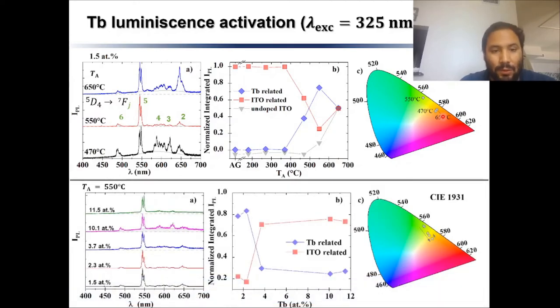Concerning the concentration quenching effect I mentioned earlier, here I'm showing you the luminescence spectra for samples annealed at 550 degrees and for different terbium concentrations. If we look at the integrated intensity, we see that in fact after a concentration above 2.3 atomic percent of terbium, the emission intensity is quenched dramatically. This is known as the concentration quenching effect.